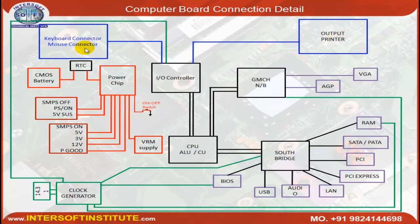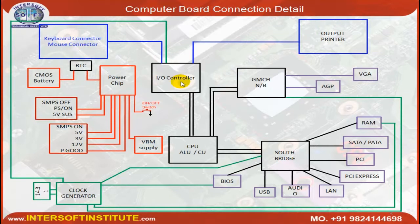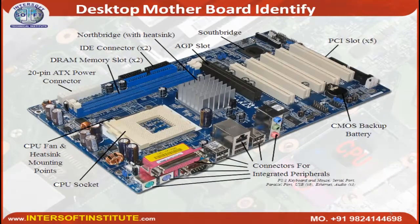To process input and output, we give the data and it produces output to printer, VGA, or display. There are various processes involved. We give input, and it processes and stores on the hard disk. For all those processes, we require different sections, so keyboard and mouse are connected through I/O to the output printer.